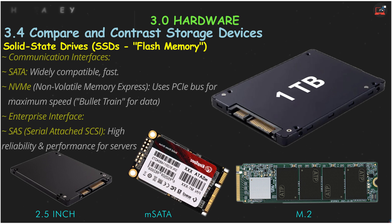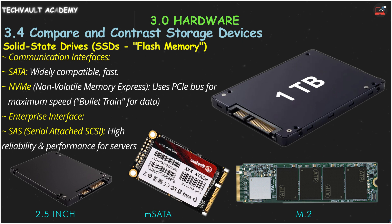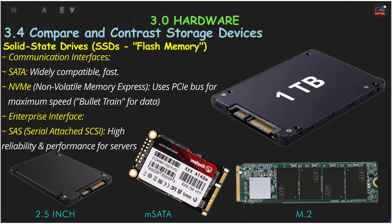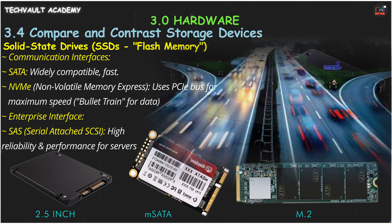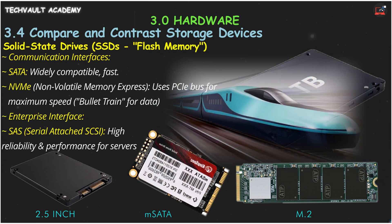The real speed difference comes from their communication interface. An SSD in a 2.5-inch form factor typically uses the SATA interface, which is fast. But the real magic happens with NVMe, non-volatile memory express. NVMe SSDs, often in the M.2 form factor, can use the PCIe — Peripheral Component Interconnect Express — bus directly, offering mind-blowing speeds that leave SATA in the dust. Think of SATA as a fast highway, and NVMe over PCIe as a dedicated high-speed bullet train for your data.